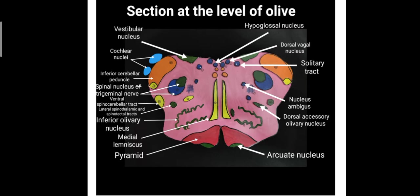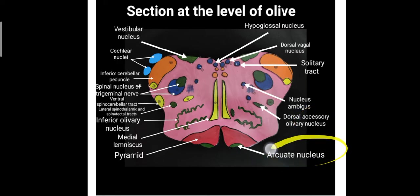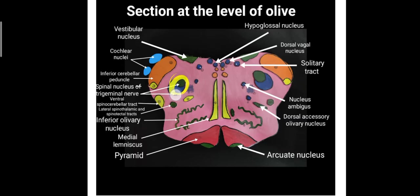Here we have a section explaining the level with all necessary points. We have the hypoglossal nucleus, lateral to that the dorsal vagus nucleus, then the solitary tract nucleus, the nucleus ambiguus, the dorsal accessory olivary nucleus, the arcuate nucleus, the pyramids, the inferior olivary nucleus, the lateral spinothalamic and spinotectal tracts, the spinocerebellar tracts, the spinal nucleus of the trigeminal nerve and its tract, and the inferior cerebellar peduncle. These are the bilateral structures present on the section at the level of the olivary nucleus.